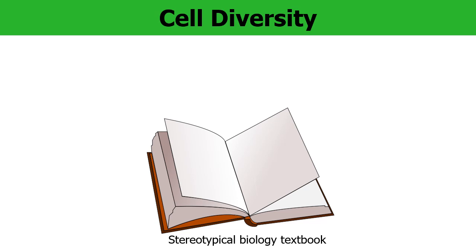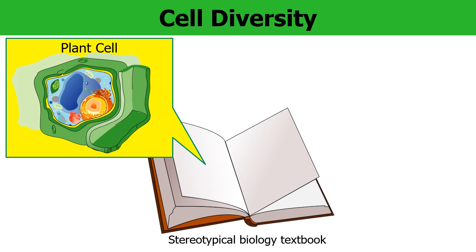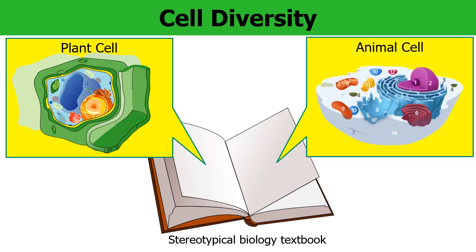Let's talk about cells and their diversity. Here's a stereotypical biology textbook — maybe on this page there's a square-shaped diagram of a plant cell, and on this page a round diagram of an animal cell. Pretty much all biology books are guilty of doing this: a square shape for a plant cell, a round shape for an animal cell. But the reality is much different. Cells are incredibly diverse.